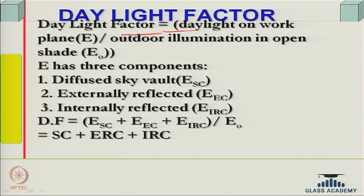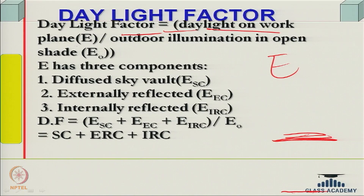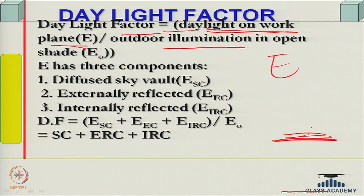The daylight factor is defined as the illumination on a work plane divided by the outdoor illumination on an open, unobstructed horizontal surface under the same sky, excluding direct solar radiation. The daylight factor has three components: sky component (SC), externally reflected component (ERC), and internally reflected component (IRC). The work plane is where you are working — a table top or blackboard — and daylight factor quantifies how much daylight reaches that plane relative to the outdoor level.